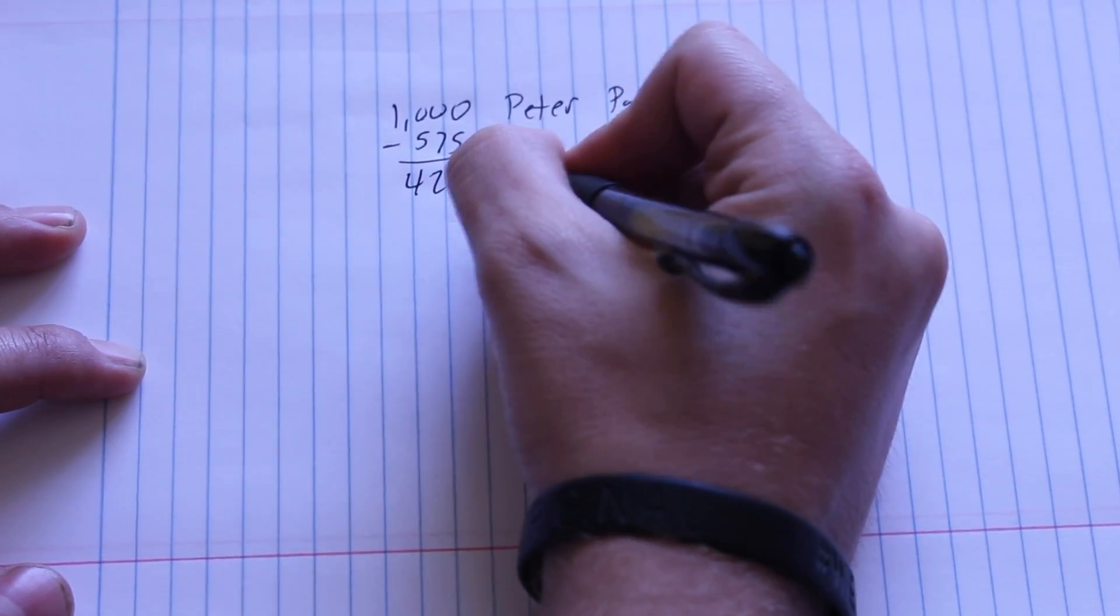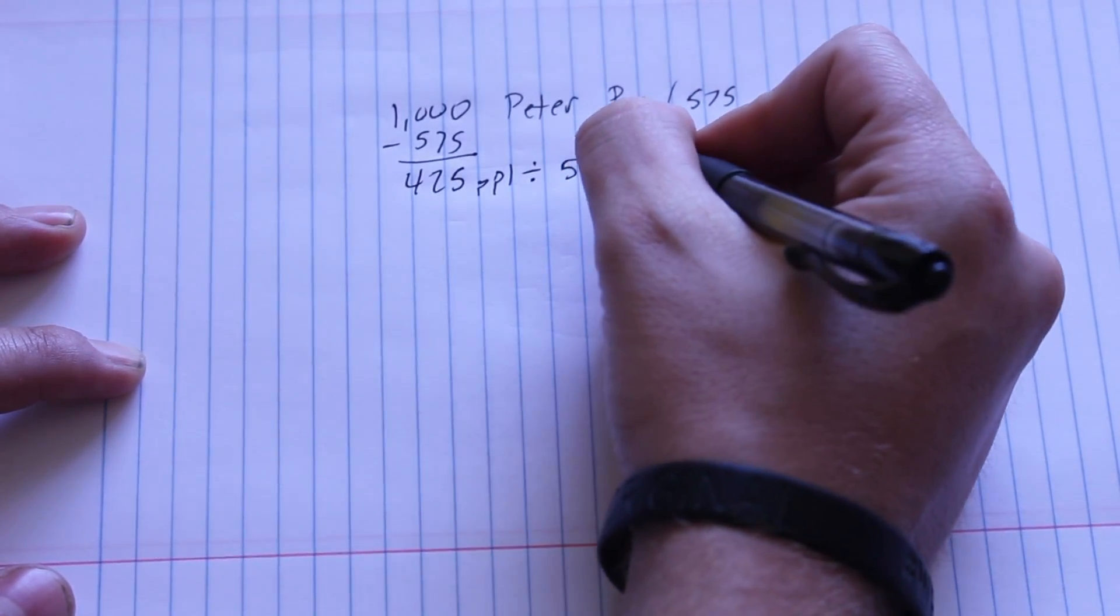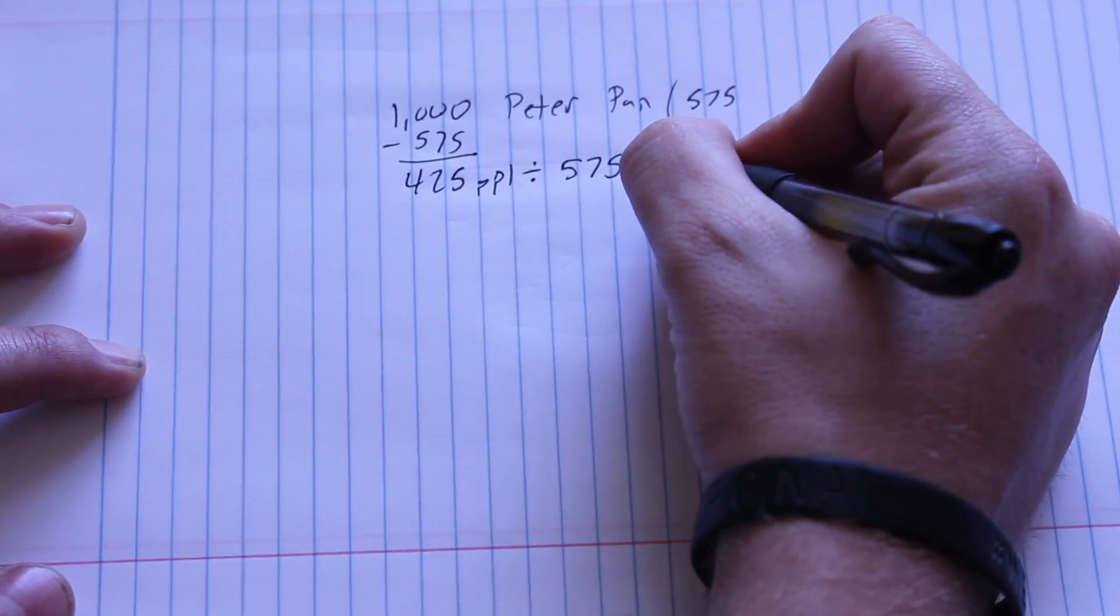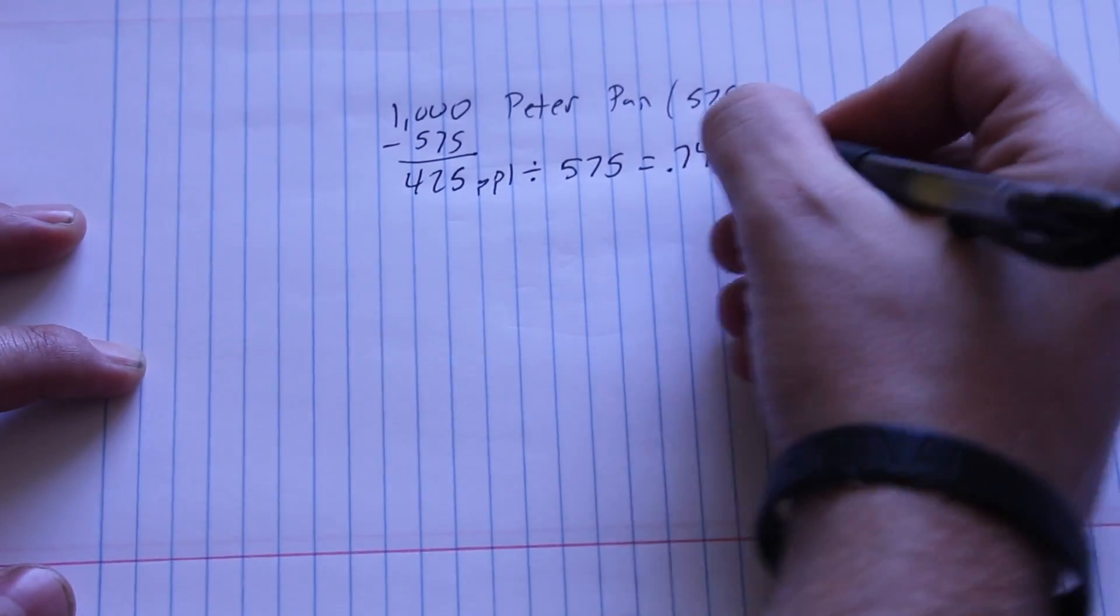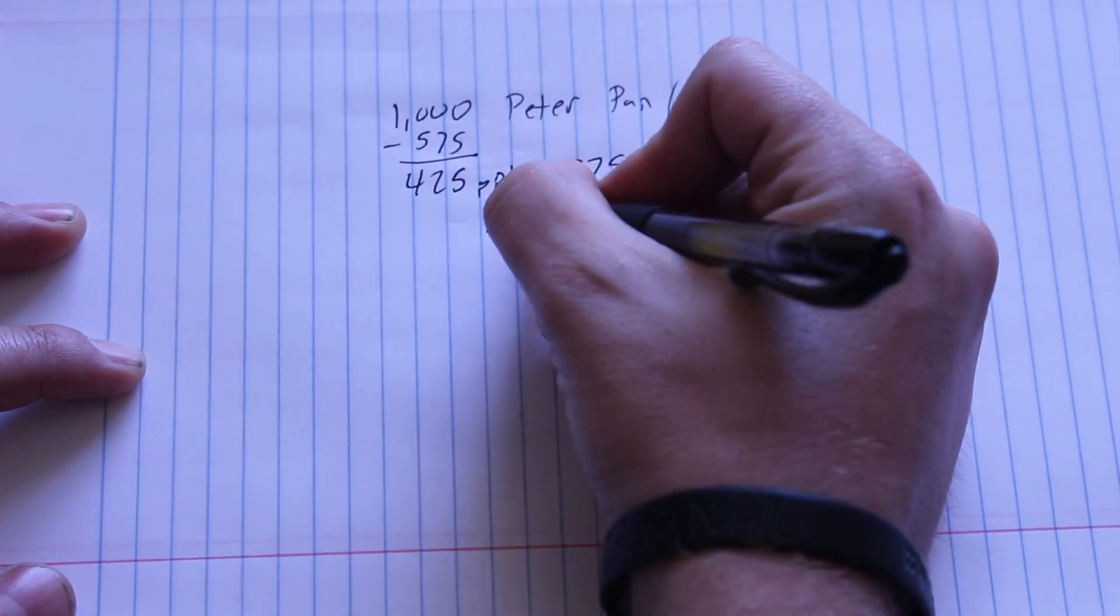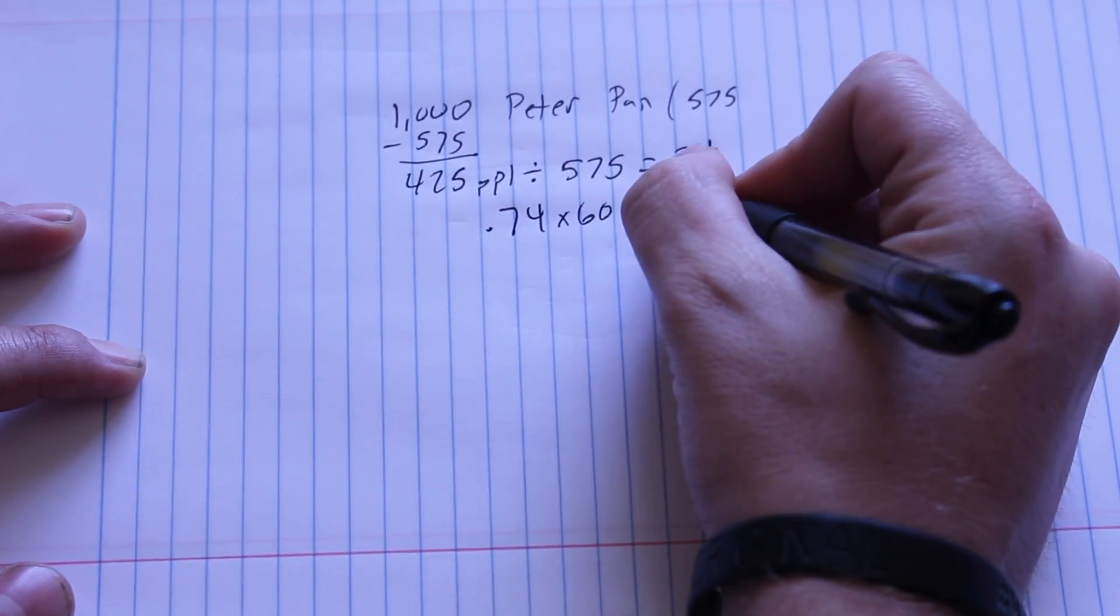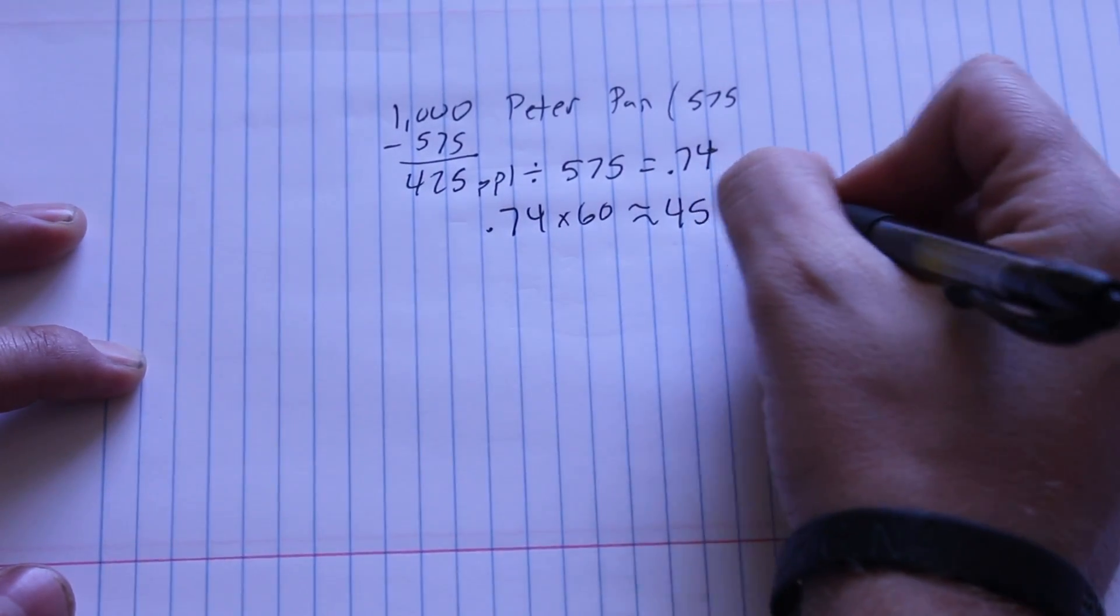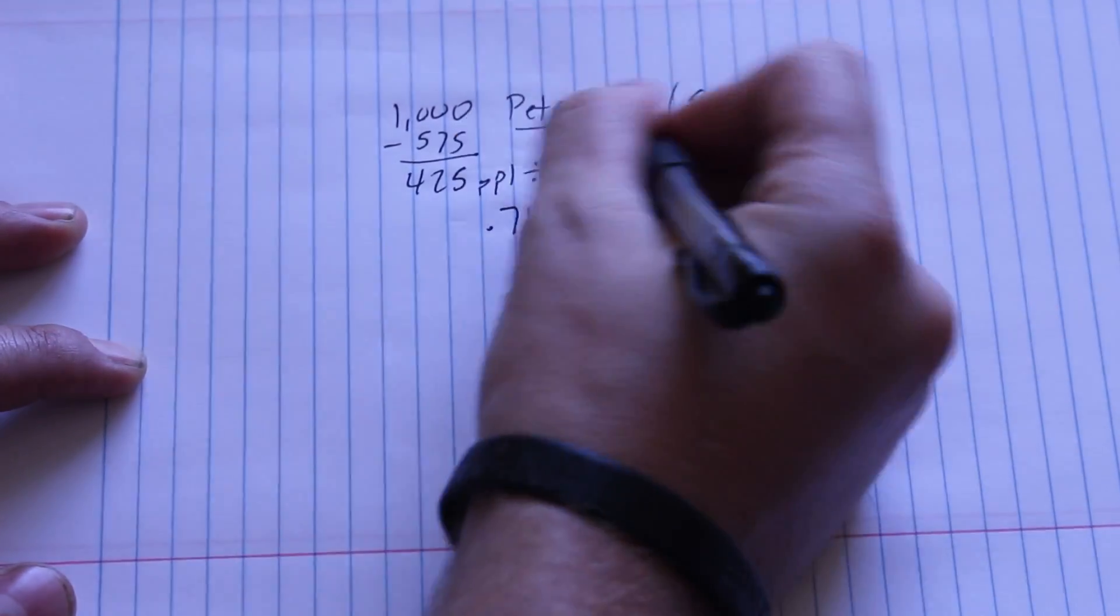We take this 425 people, divide it by the 575 hourly capacity, and we end up with about 0.74. And again, I'm rounding a little bit here. Multiply this 0.74 by 60 for the number of minutes, and you'll be waiting about 45 minutes for 1,000 people in one hour to ride Peter Pan.